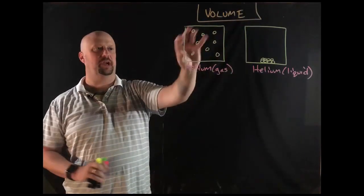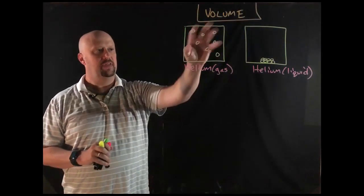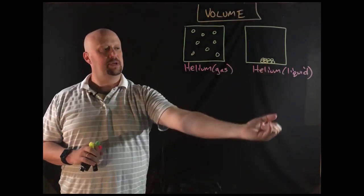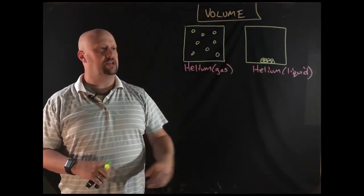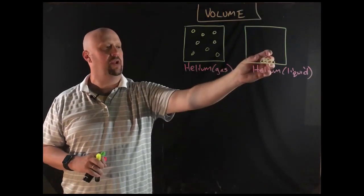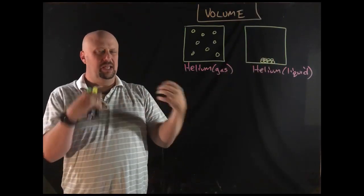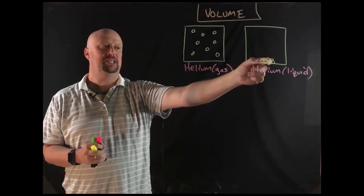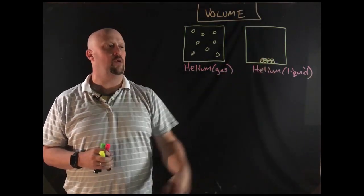We just said in the last section that the gas particles are going to fill up their container. When we reduce the temperature of helium, in other words, pull the kinetic energy out of it, allow those particles to slow down, they're going to come together. So liquid helium, the particles are much more tightly compacted together. They're basically touching each other and sort of able to flow around each other.